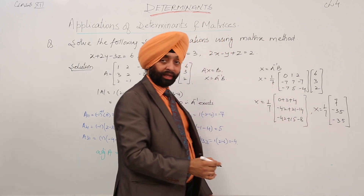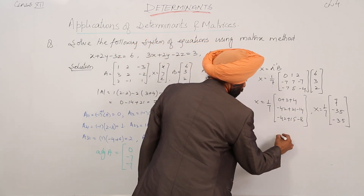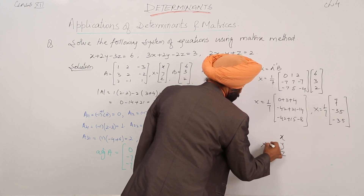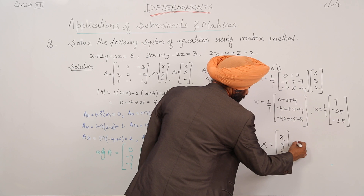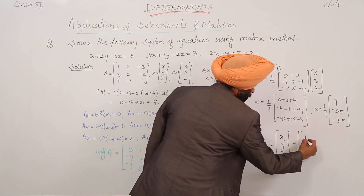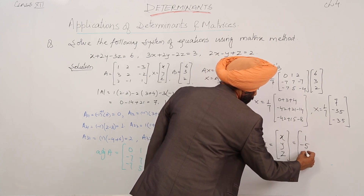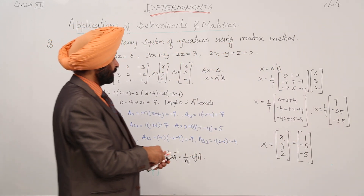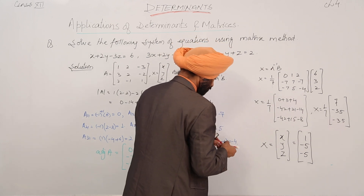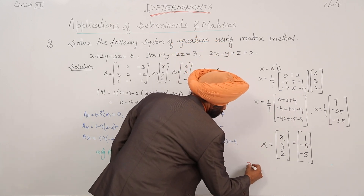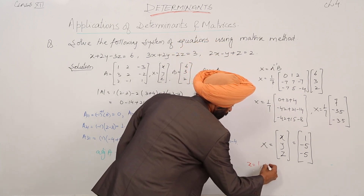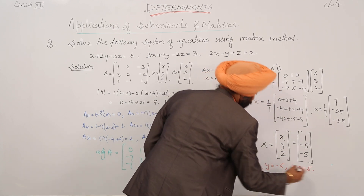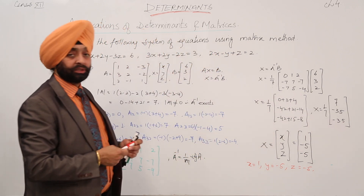So finally, in place of x vector we are writing x, y, z. So x, y, z is equal to 1 by 7 times 7, minus 35, minus 35. Therefore x is equal to 1, y is equal to minus 5, and z is equal to minus 5.